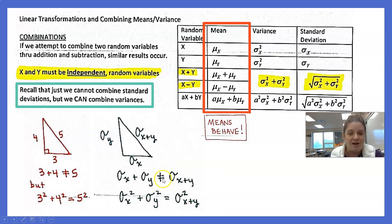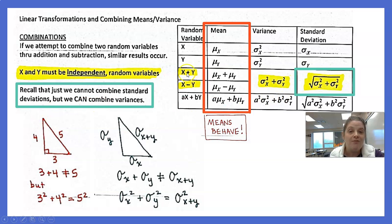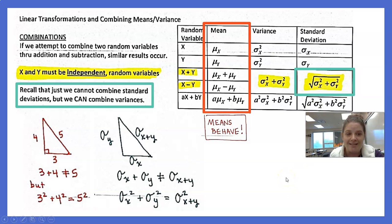Standard deviations act like the Pythagorean theorem. The key word is: variances always add — always — whether it's X + Y or X − Y. Think of the triangle flipped in another direction: you don't say it's negative 3 units. It's important that the two variables be independent, meaning the probability distribution of the first should not affect the probability distribution of the second.